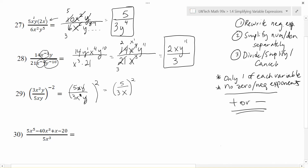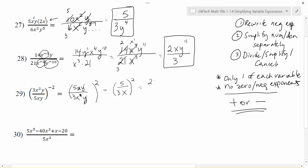I want my final answer to have no parentheses, so I take everything to the second power. The 5 squared gives me 25. On the bottom, 3 squared is 9 and x squared is x squared. So the final simplified solution is 25 over 9x squared.